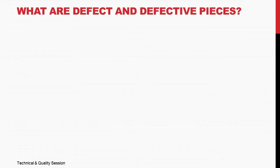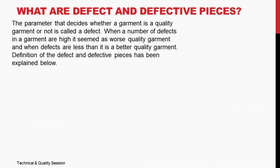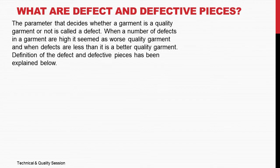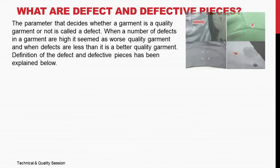What are defect and defective pieces? The parameter that decides whether a garment is a quality garment or not is called a defect. When the number of defects in a garment is high, it is seen as a worse quality garment. And when defects are less, then it is a better quality garment. The definition of defects and defective pieces has been explained below.